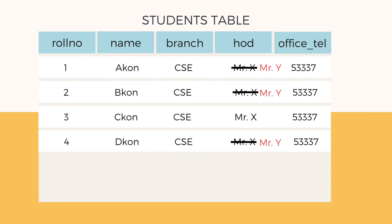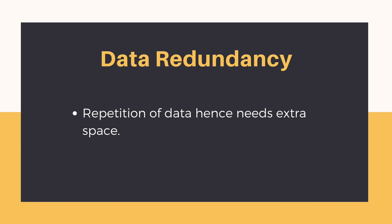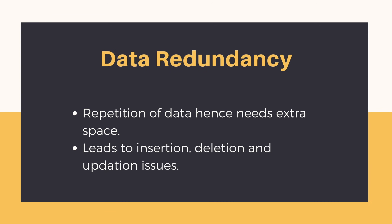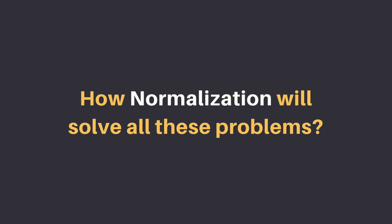Now you understand that data redundancy is problematic not only because it eats up extra space, but it leads to problems in inserting new data, deleting data, and a huge problem if we have to update data. So now the million dollar question is: how will normalization solve this problem?